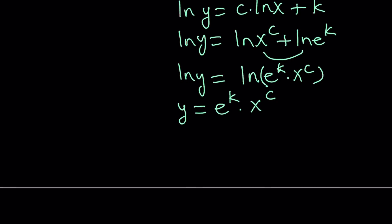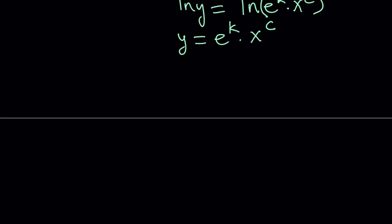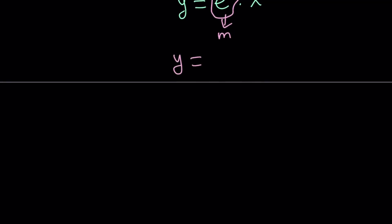Now since we have ln on both sides, we can get rid of them or do e to the power both sides. That gives us y equals e to the power k times x to the power c.